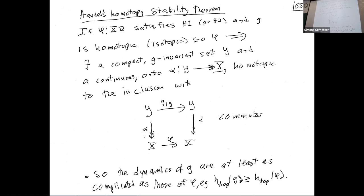The dynamics persists not via a full semi-conjugacy but via a semi-conjugacy restricted to some compact invariant set Y. The theorem says there's a compact invariant set Y with a continuous onto map, alpha-homotopic to the inclusion, with this diagram commuting. In short, even if you perturb one of these maps arbitrarily much, as long as you stay in the same homotopy class, your dynamics all persist. In particular, your entropy can only go up.